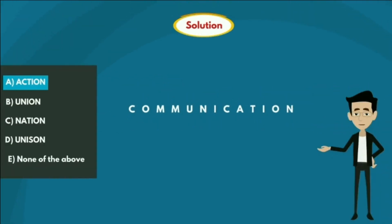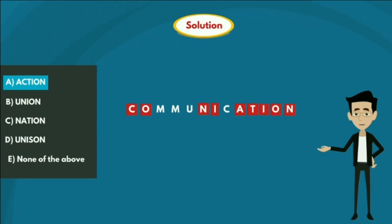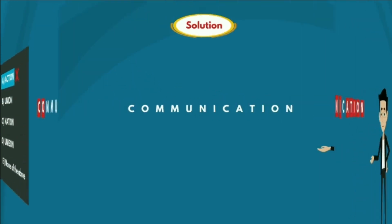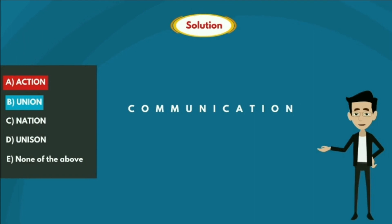Option A — ACTION. If we observe, all the letters A-C-T-I-O-N are present in the given word COMMUNICATION. Option B — UNION. All the letters U-N-I-O-N are also present in the given word COMMUNICATION.